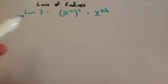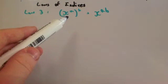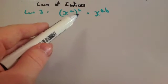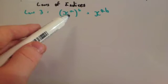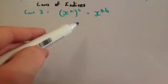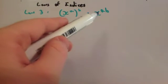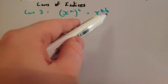Okay, and we're going to look at the third law, which is x to the power of a, and all of that to the power of b — a power of a power. So you're going to times the two powers together, and you get x to the power of ab.